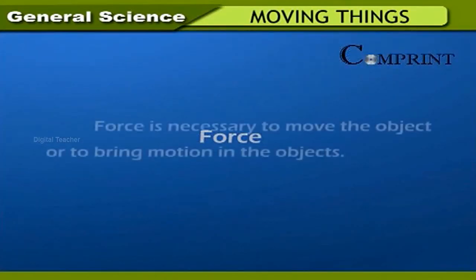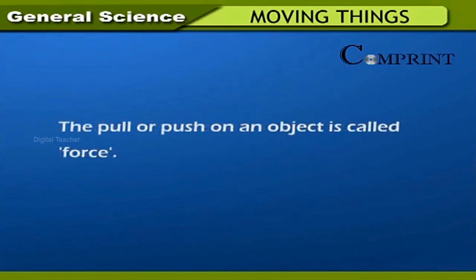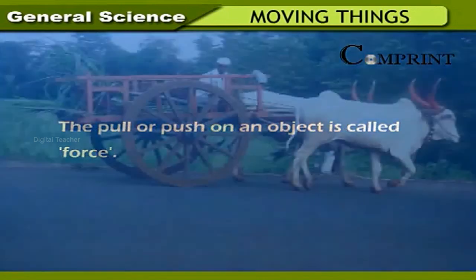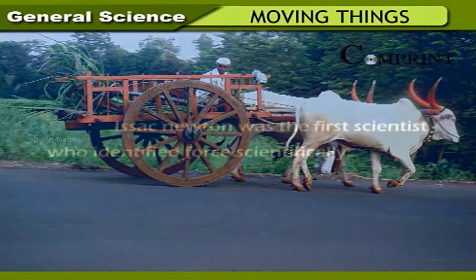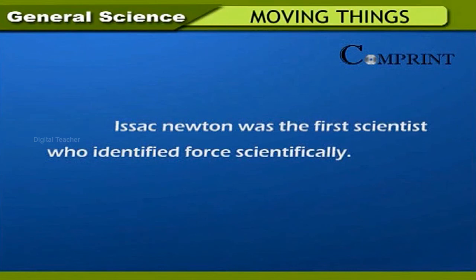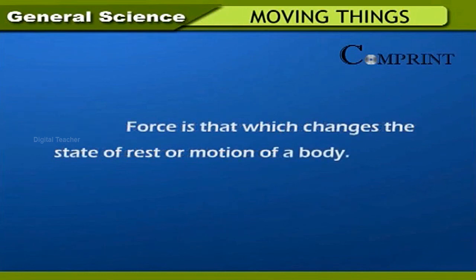Force is necessary to move objects or to bring motion in objects. The pull or push on an object is called force. For example, an ox has to put more force to pull a cart. Force can push or pull an object and it causes motion. Isaac Newton was the first scientist who identified force scientifically. The movement of an object depends on the direction of the force. Force is that which changes the state of rest or motion of a body.